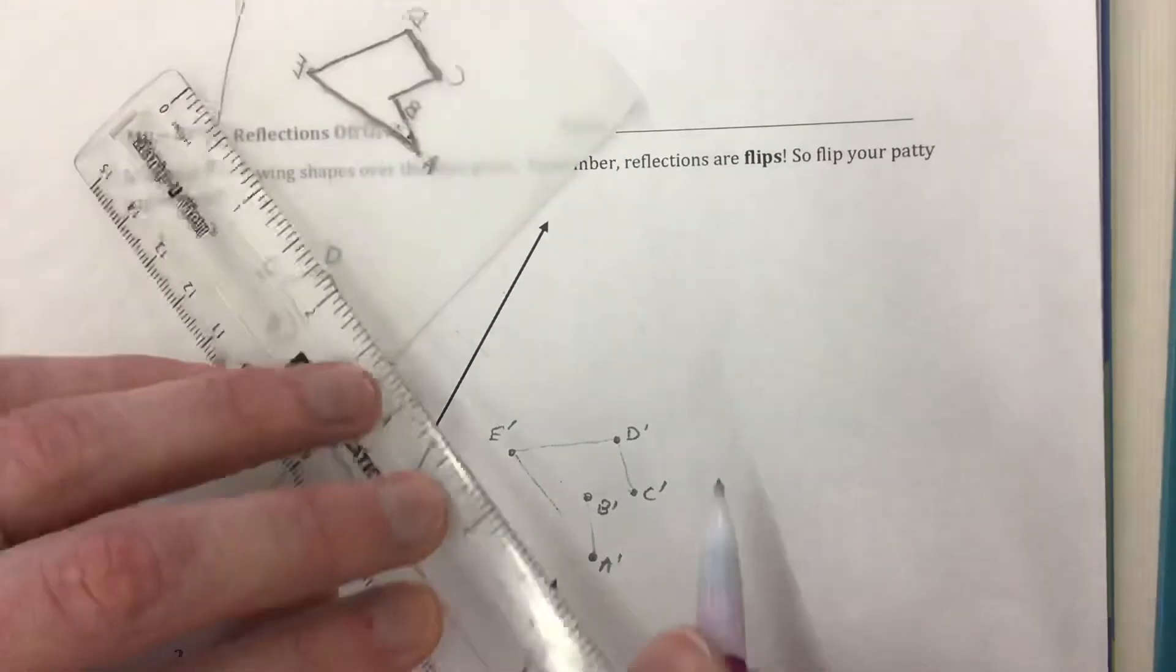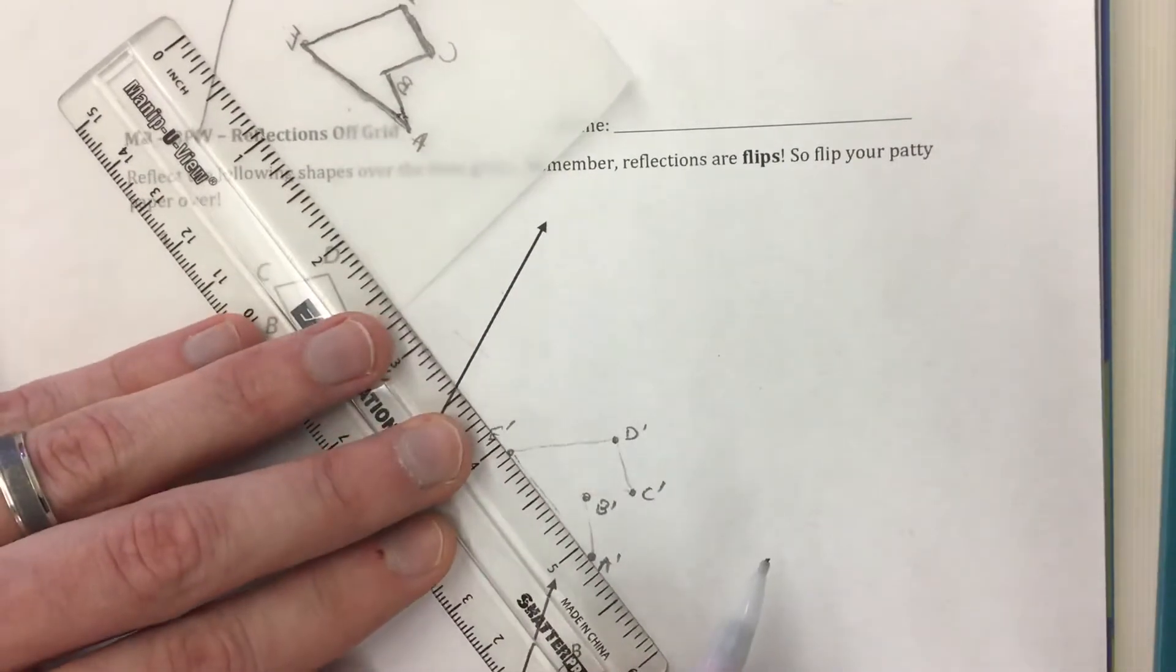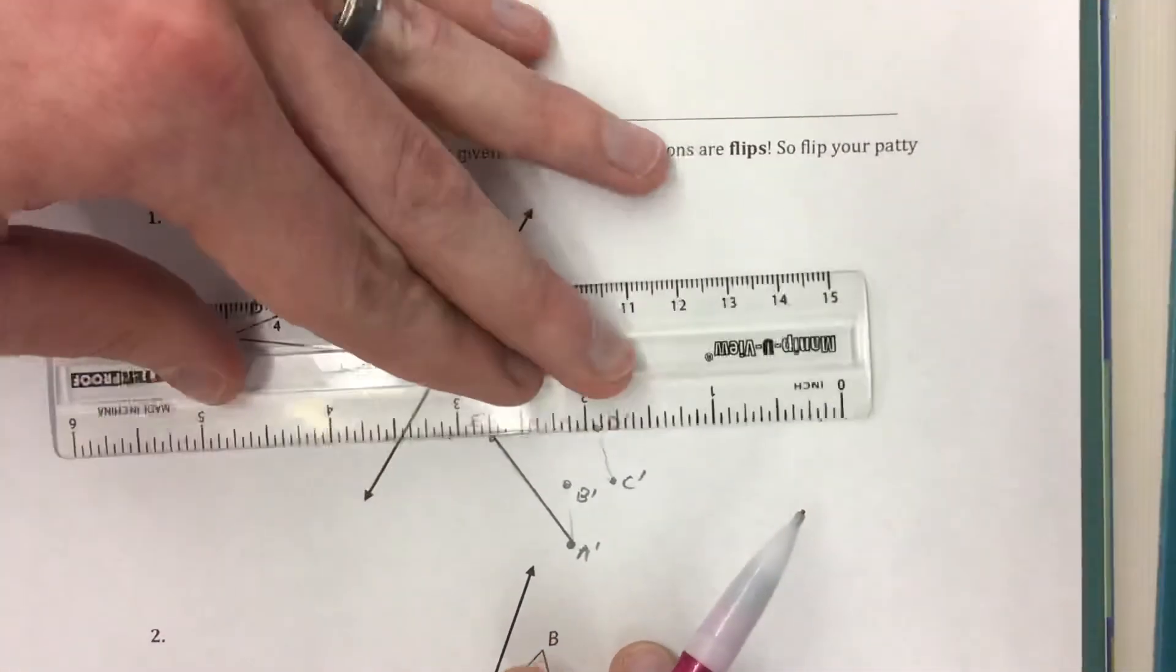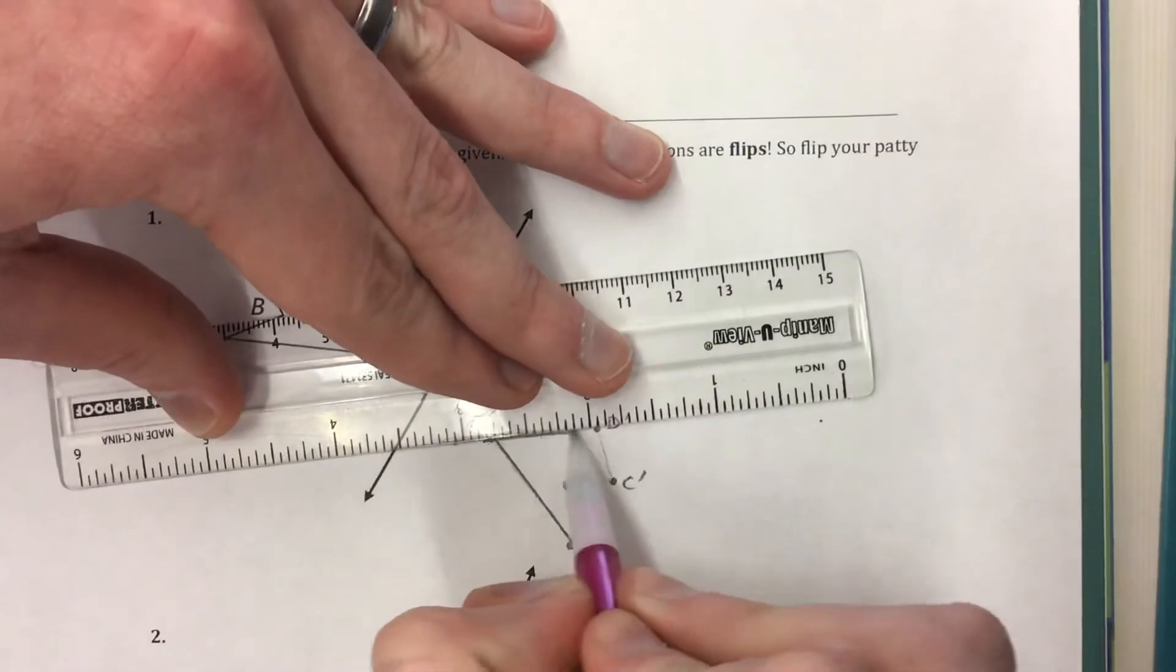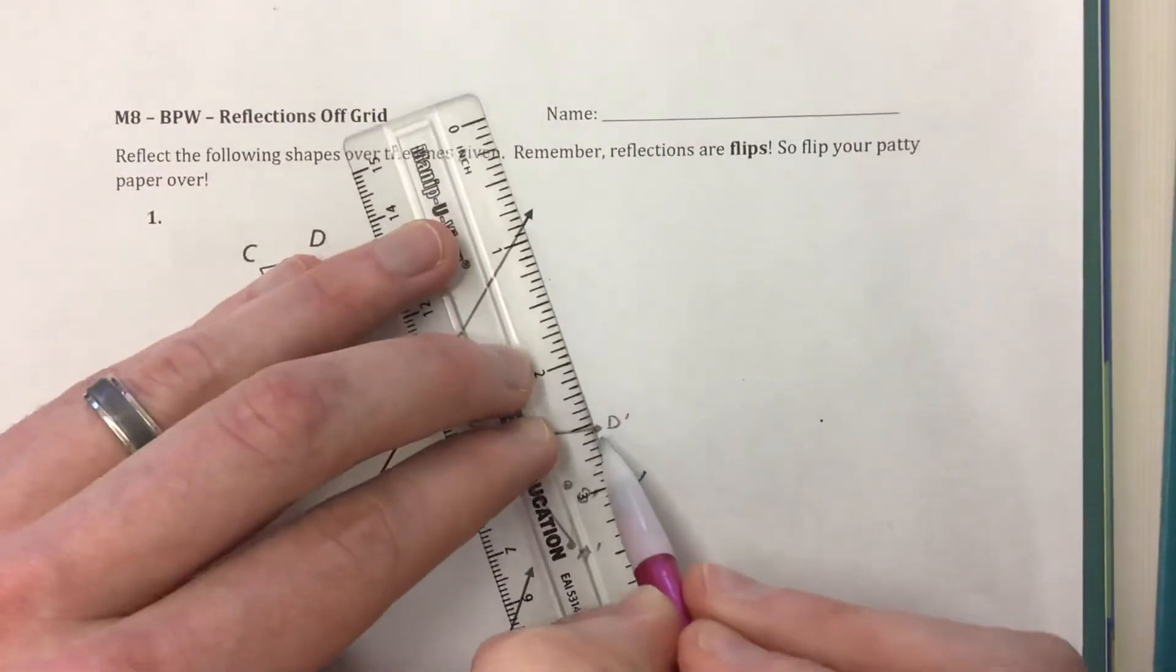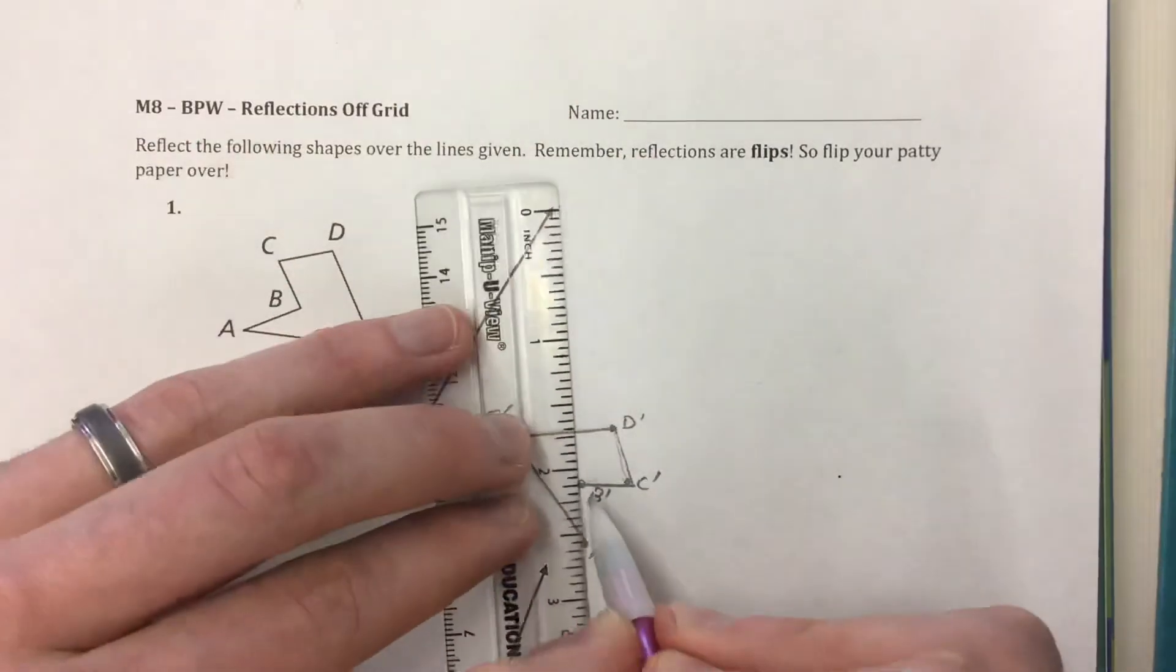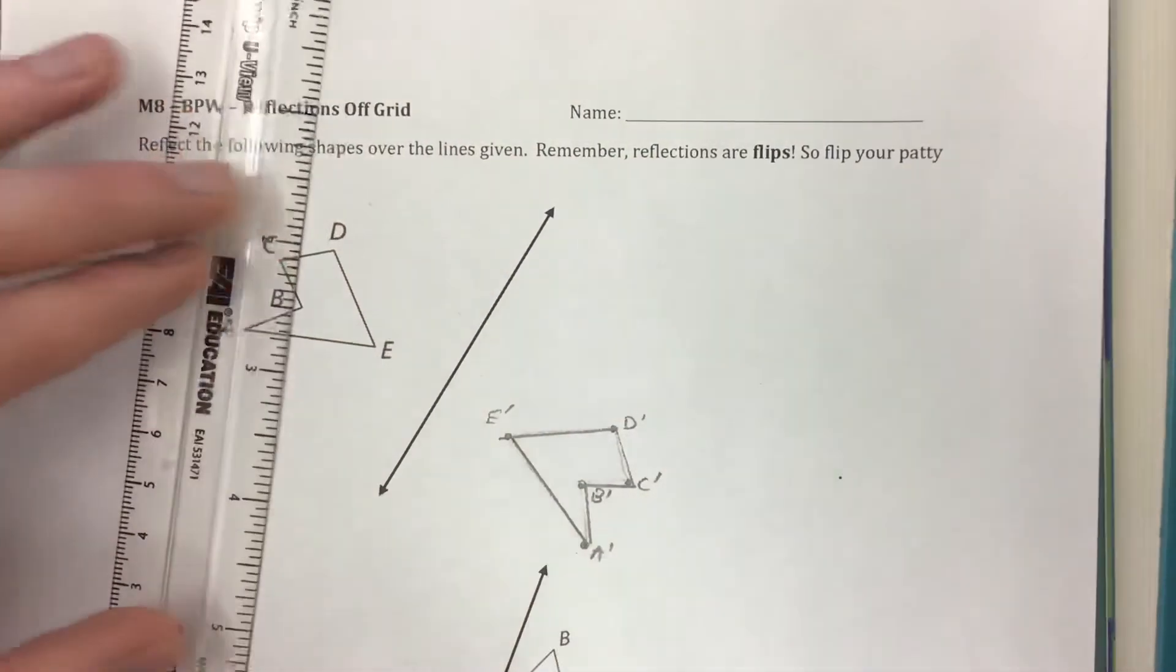Then to make it look nice we're going to use a ruler. Let's connect those vertices and we've got our reflected shape. And now we're done.